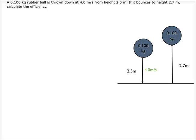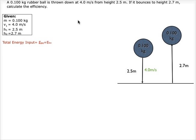A 0.100 kilogram rubber ball is thrown down at 4.0 meters per second from a height of 2.5 meters. If it bounces to a height of 2.7 meters, calculate the efficiency.